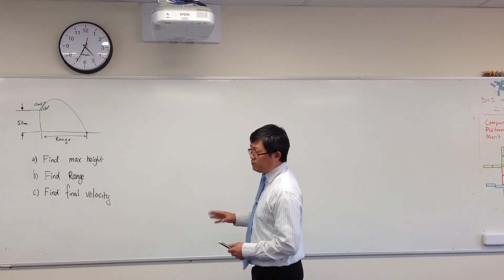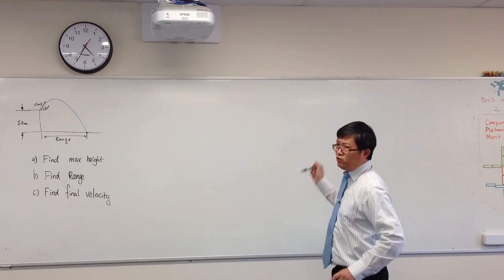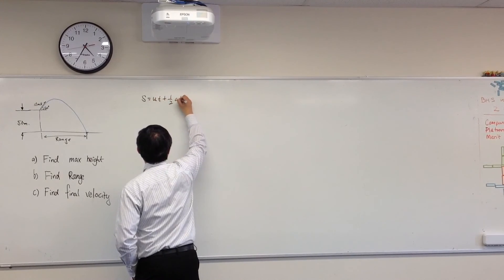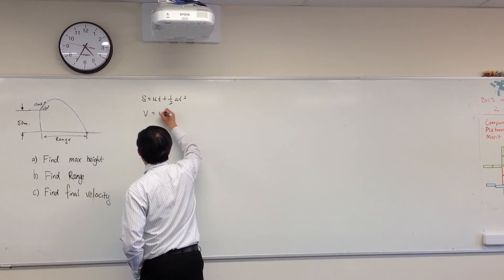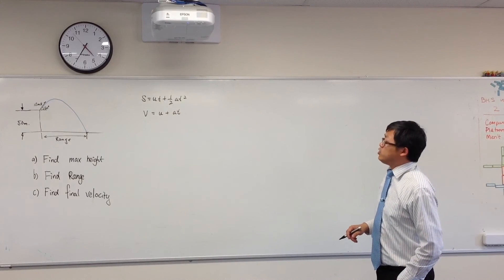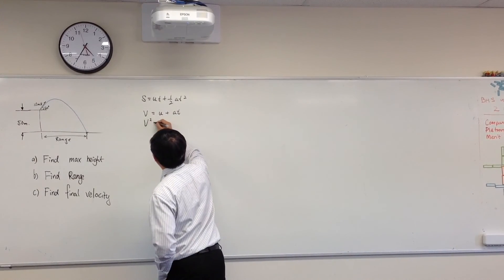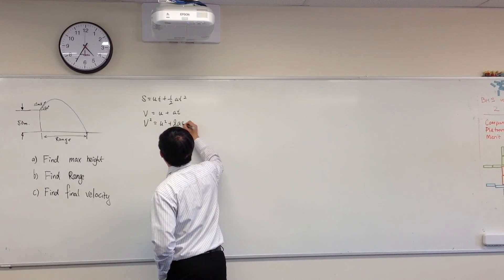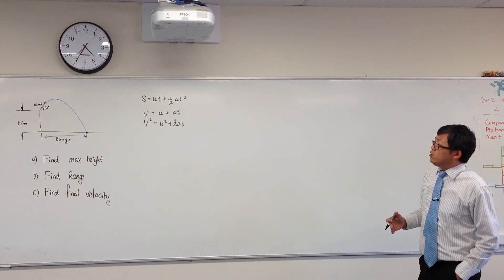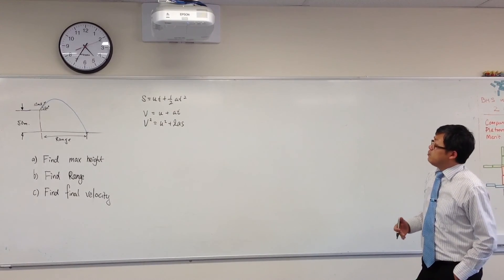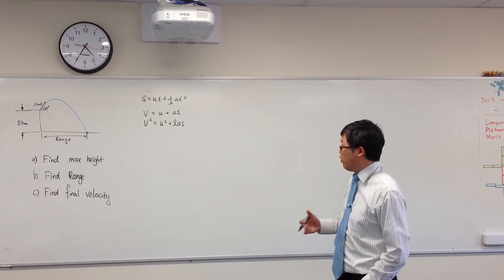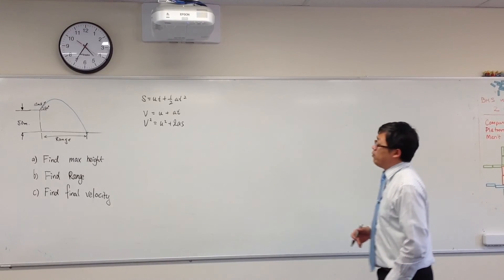Anyway, let's look at part A. You need to determine maximum height. Now, when you think about maximum height, you have two equations at your disposal. The first equation being s equals ut plus half at squared. The other one would be v equals u plus at. Now, I hope you can see that both of these equations - oh sorry, there's actually one more: v squared equals u squared plus 2as.